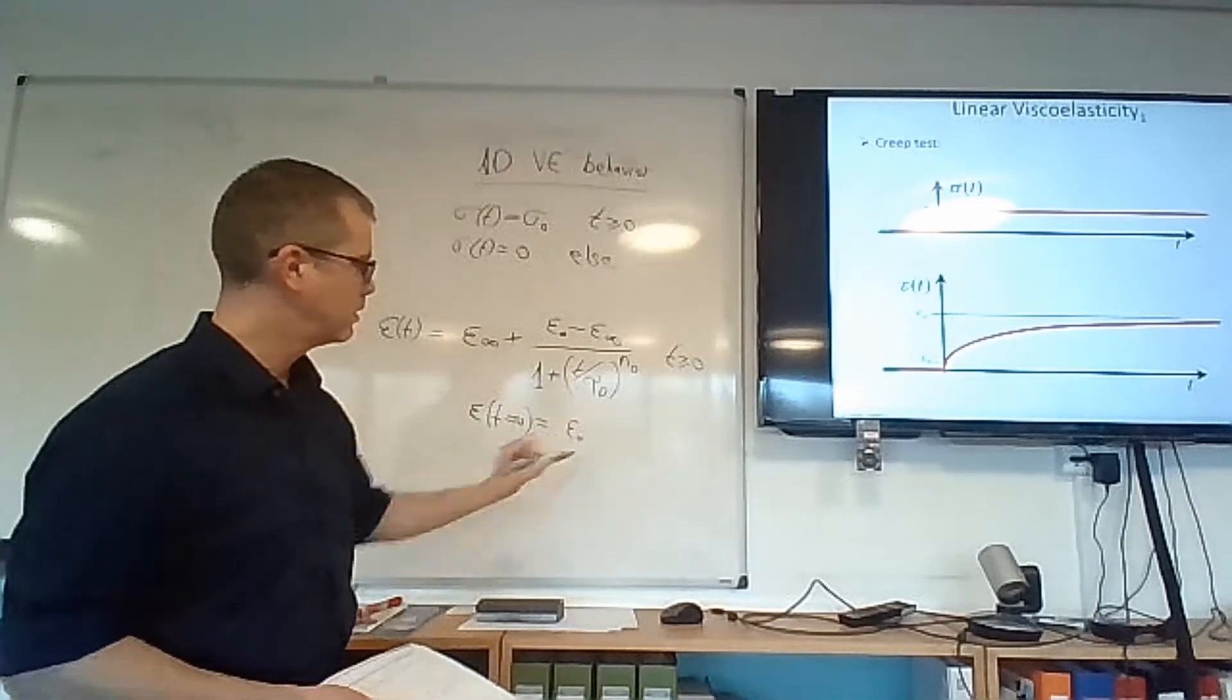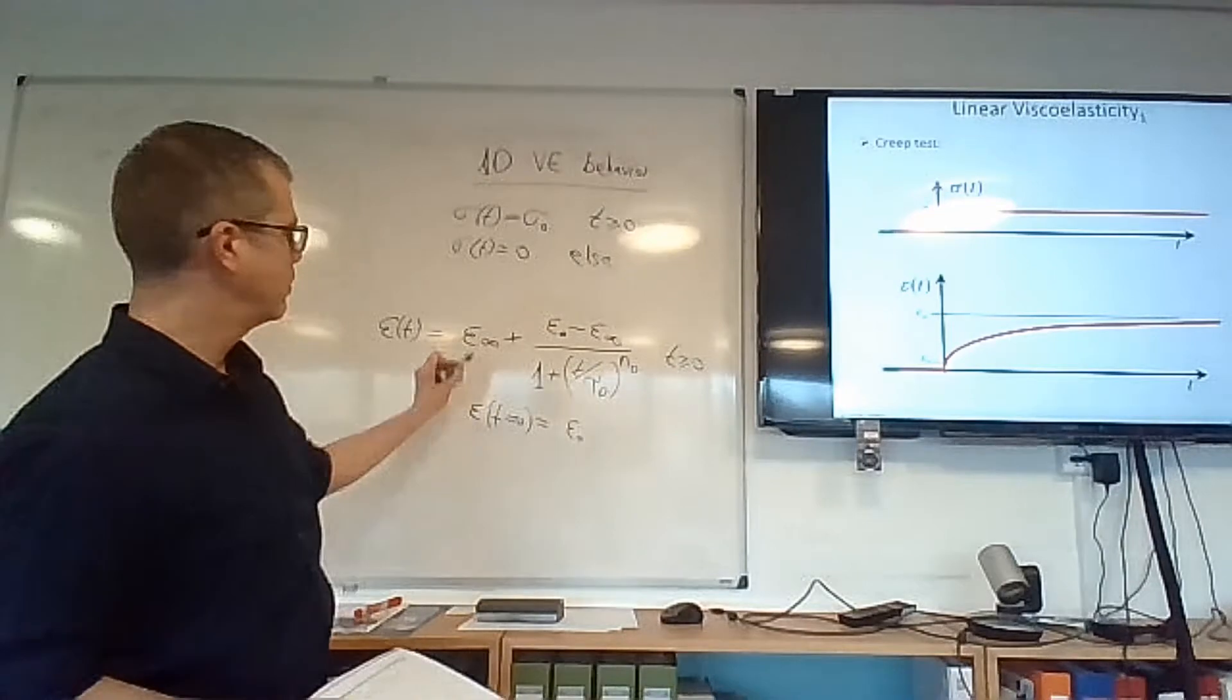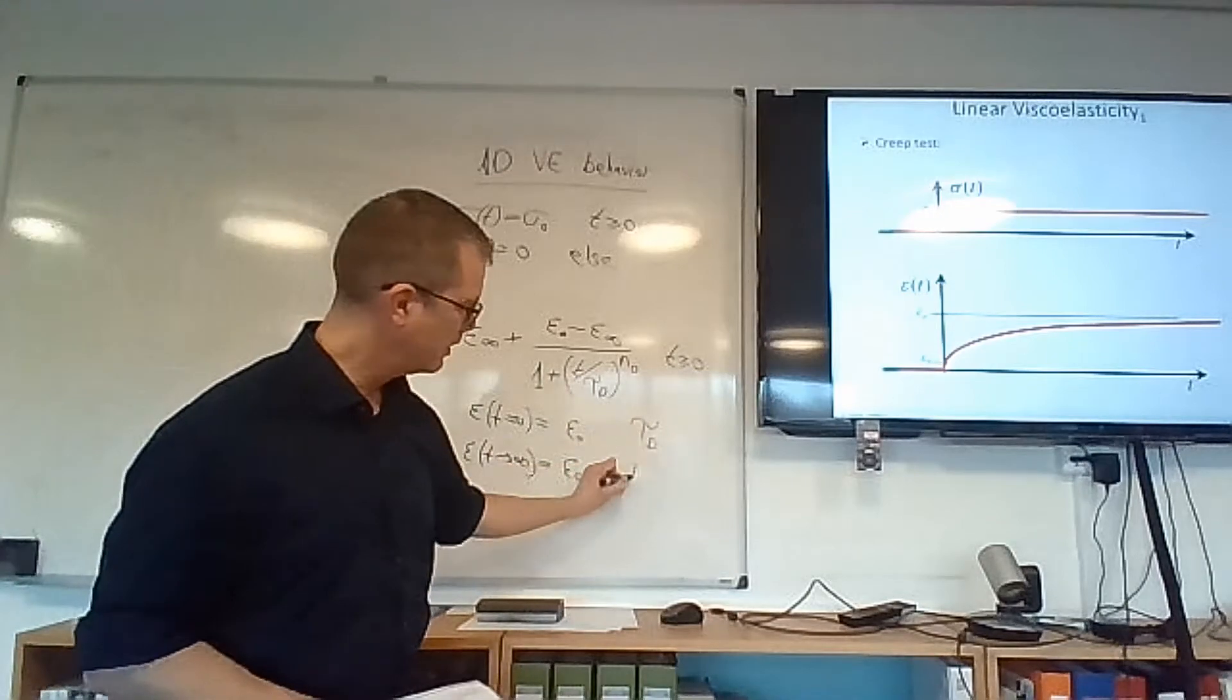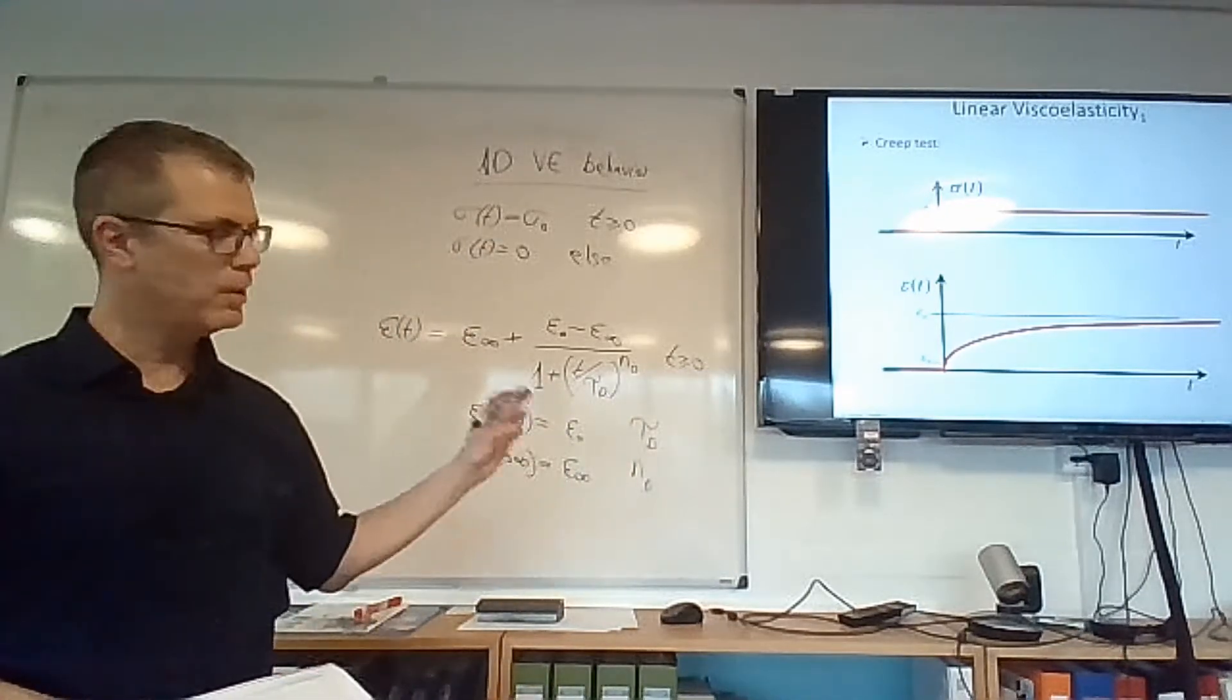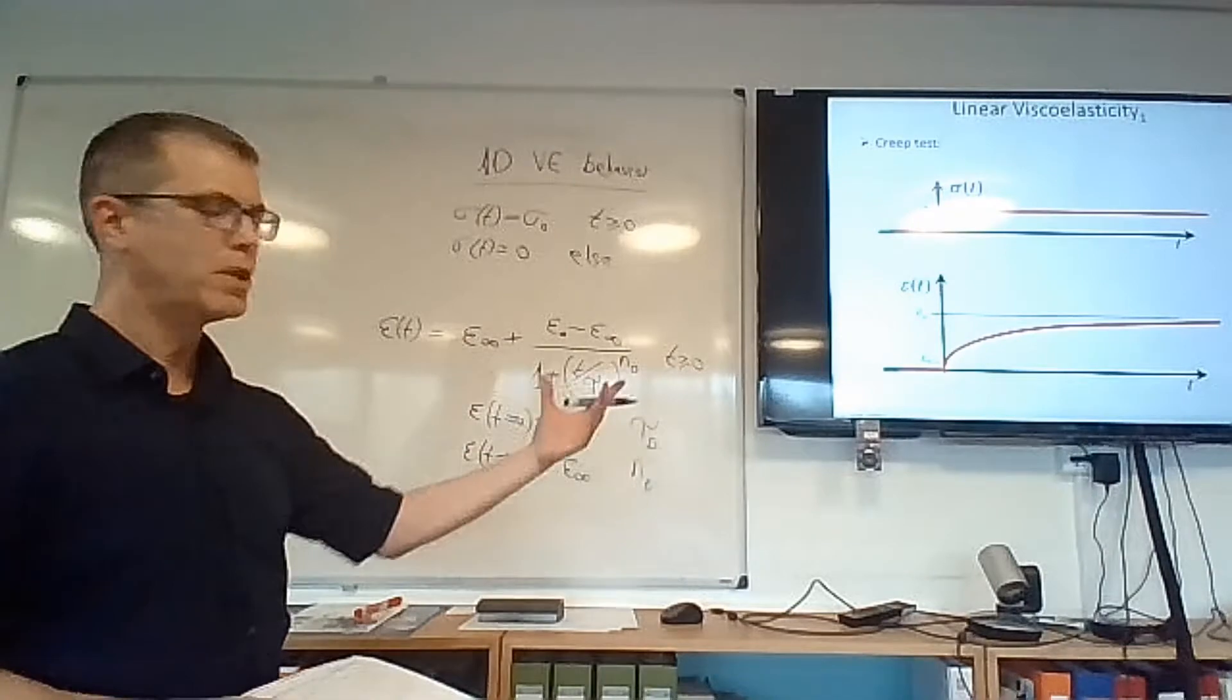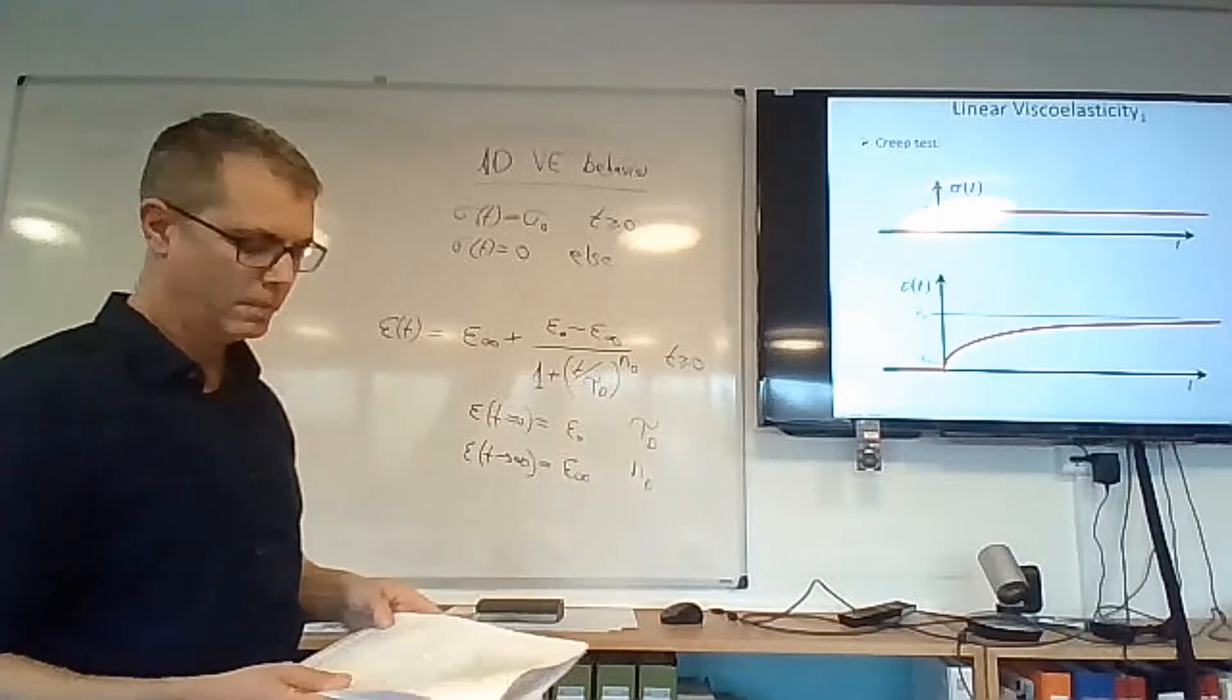And then we have epsilon infinity plus epsilon zero minus epsilon infinity. That means that if we plug in t equals zero, this expression gives us epsilon zero, which is what we expect. And if t is very, very large, then everything here goes to zero and we end up with epsilon infinity. So, basically, tau and n are shape parameters. They're numerical values. They're both positive, by the way. And the numerical values are controlling how fast the transition between zero and infinity happens and what shape would this curve look like. So, if this curve would be very sharp or very slow to reach epsilon infinity.